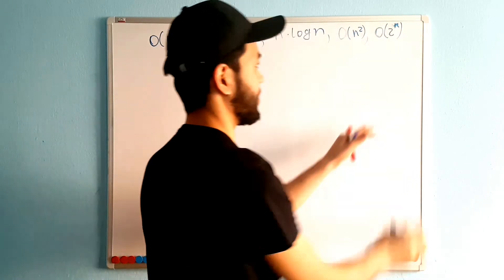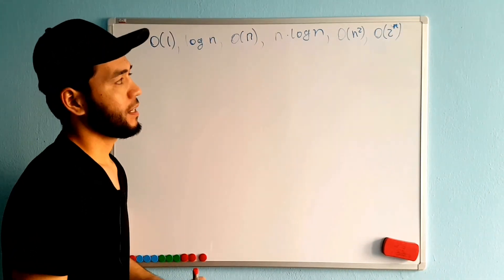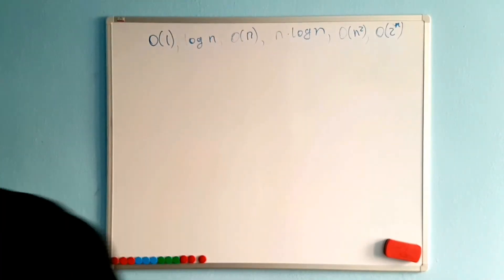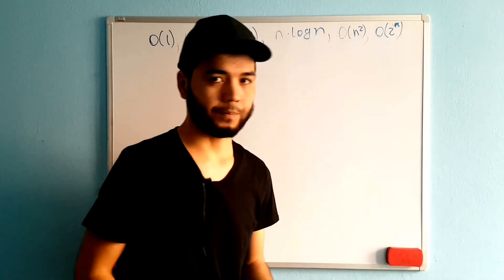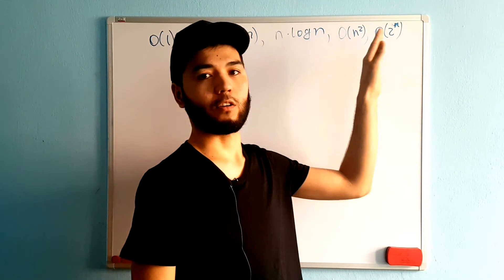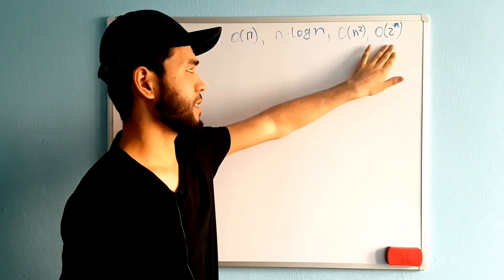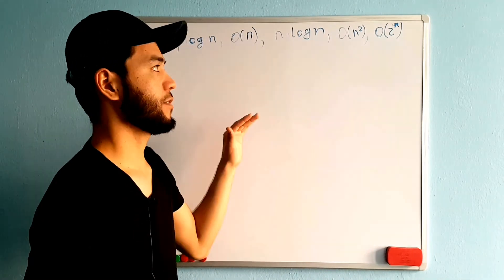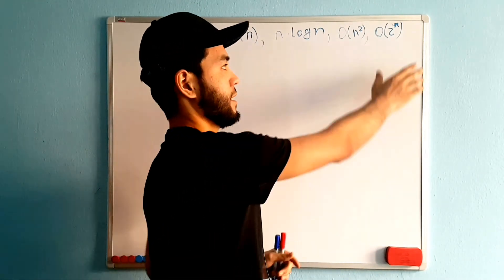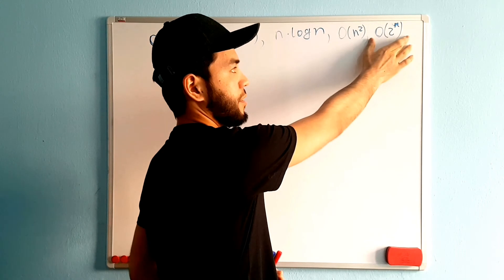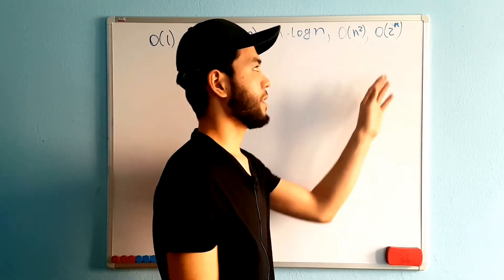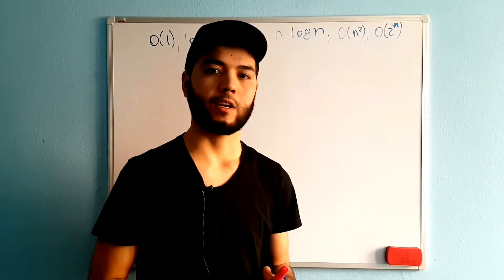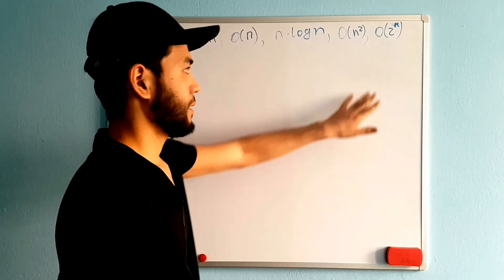The last type is O(2^n), exponential time complexity. This is a very poor time complexity. A classic example is the Fibonacci function using recursion — if you remember from the recursion chapter, the Fibonacci function has exponential time complexity. Each call branches into two more calls, making the growth very fast and inefficient.